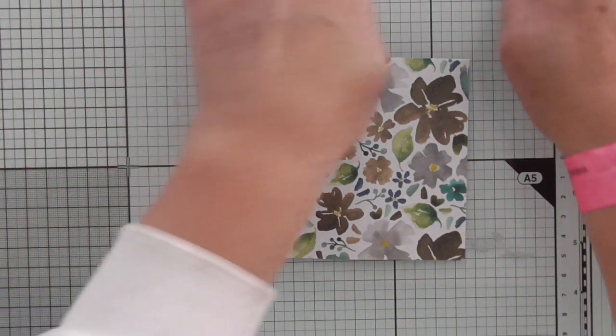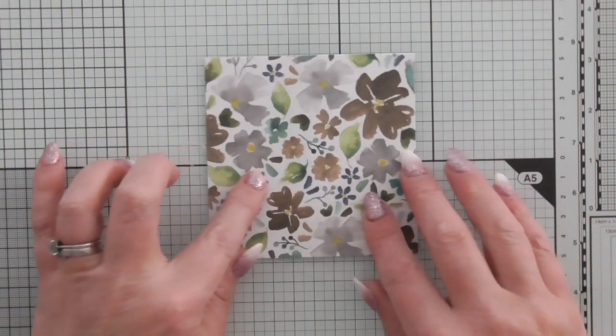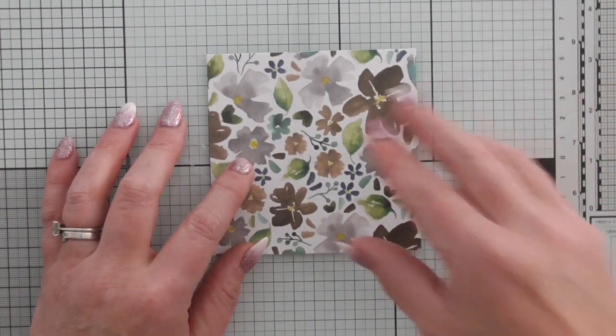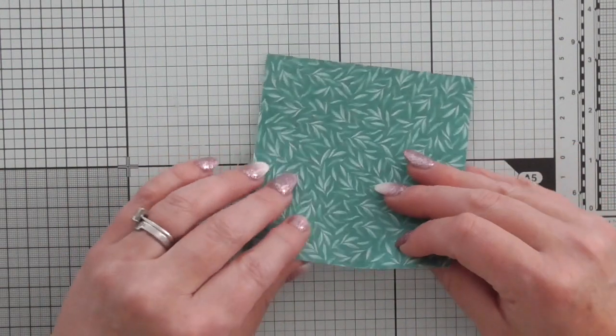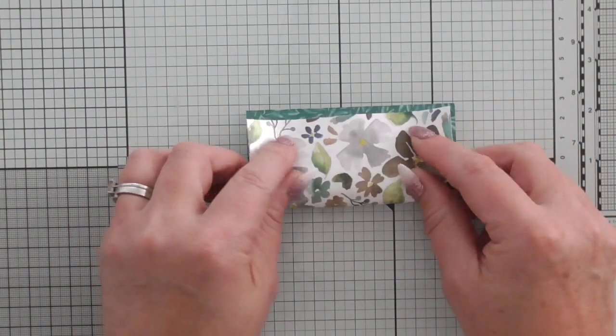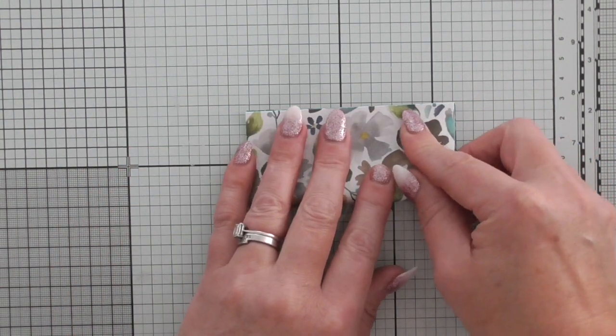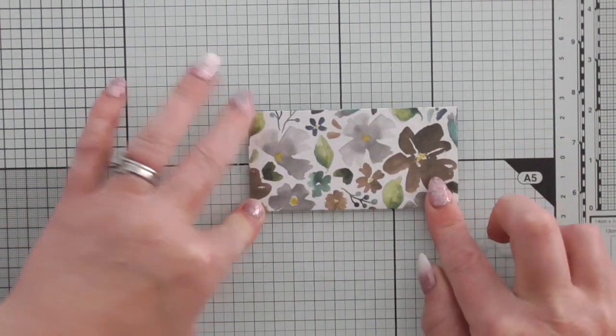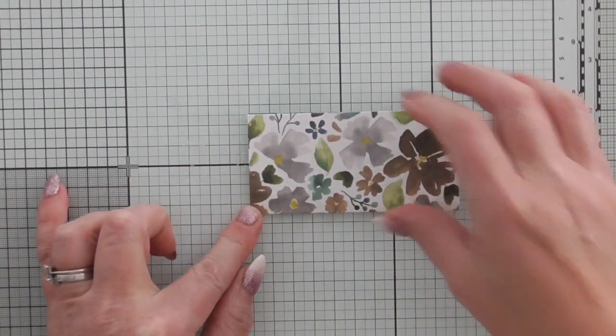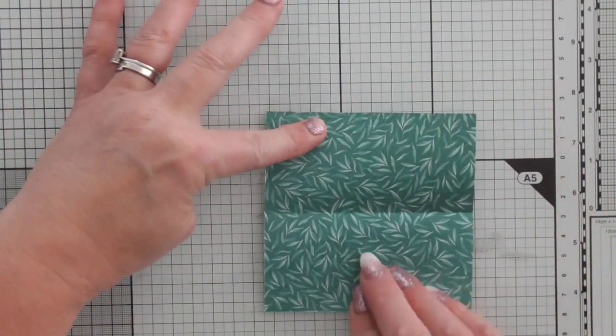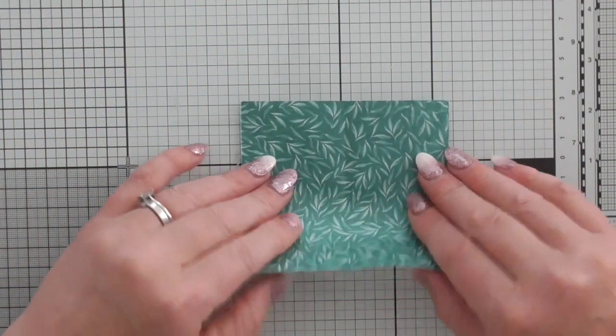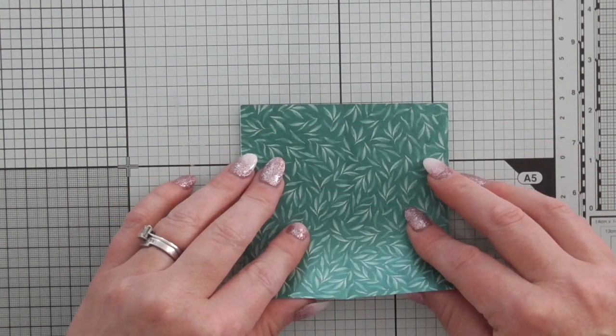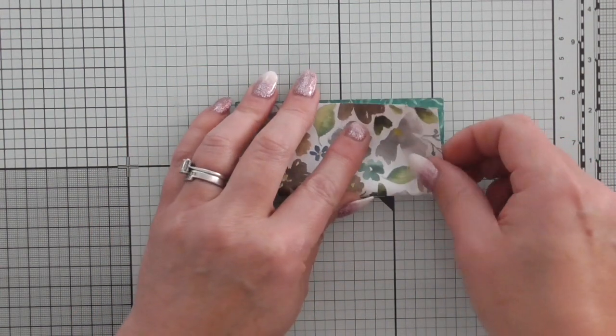Okay so we'll just move those to one side. So what you're going to do with your 4x4 square is we're going to do a bit of folding. So first of all we're going to fold it in half and this is such fun and so quick.